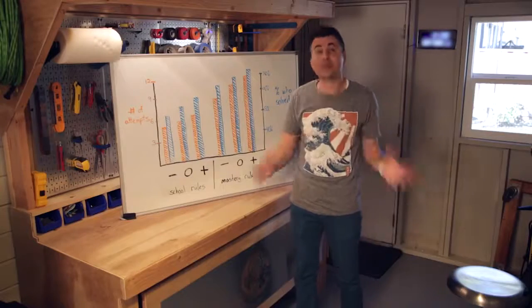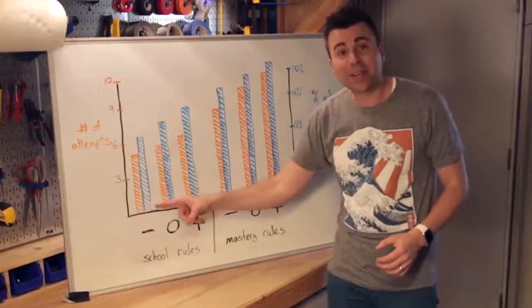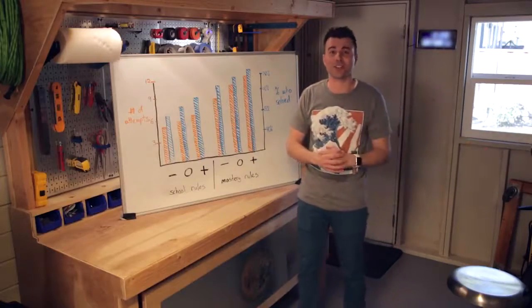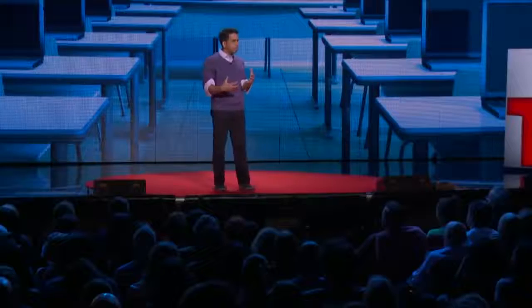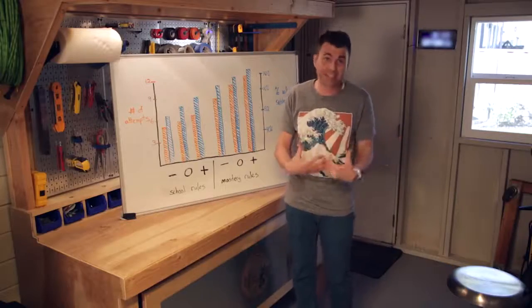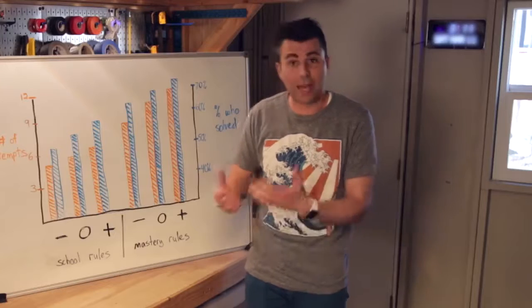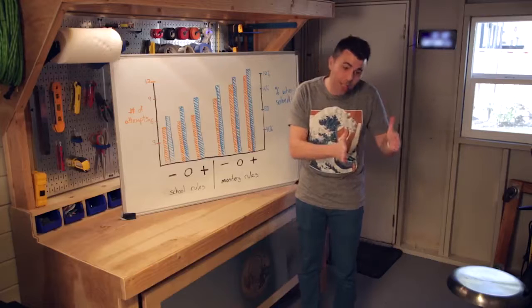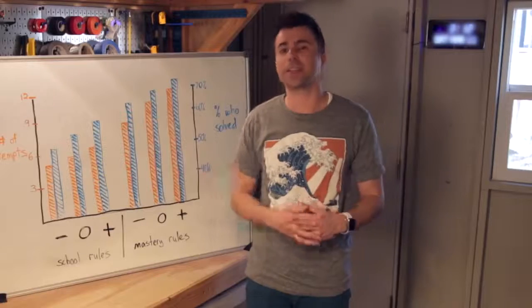The reason this matters so much is because this is how the US and most educational systems around the world are structured. Sal Khan, the guy who started Khan Academy, has an awesome TED talk on this topic. He points out how absurd it is that if I take a test and get a 70%, which points out gaps in my understanding—my teacher has identified 30% of the material I don't get—but the next day we just move on to the next chapter.